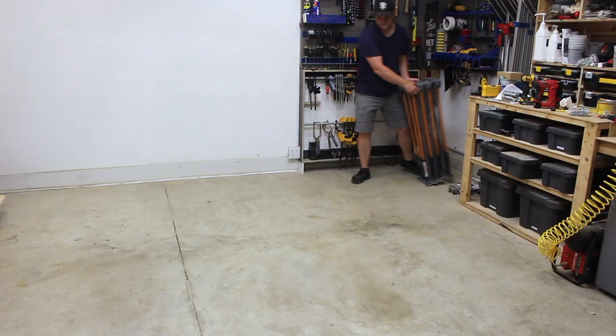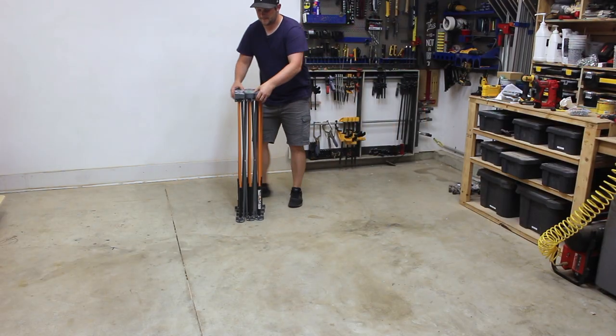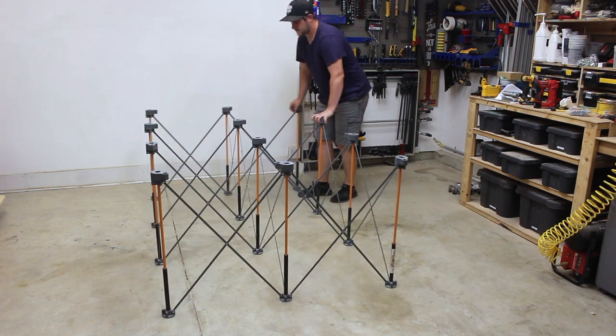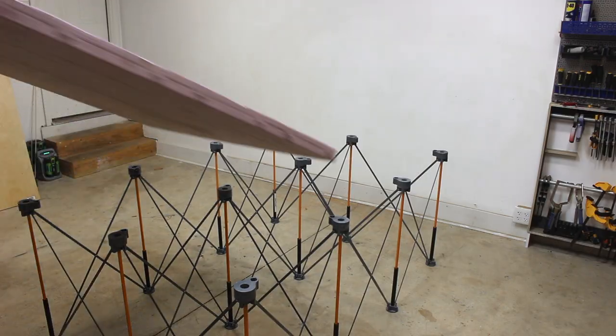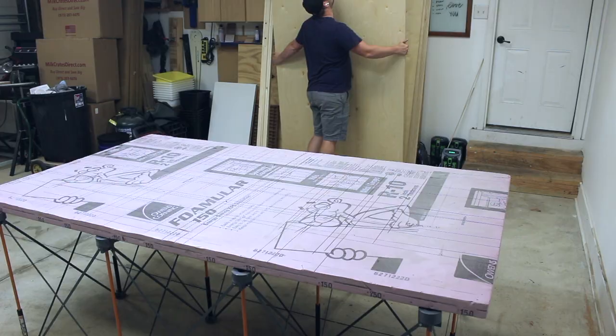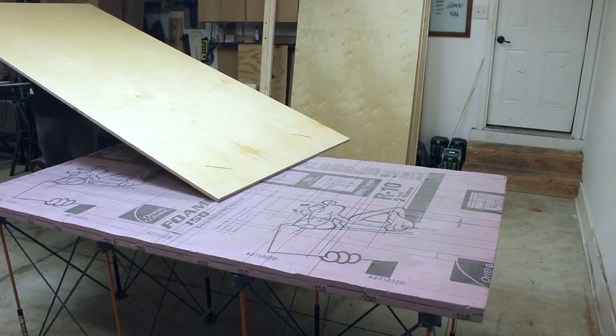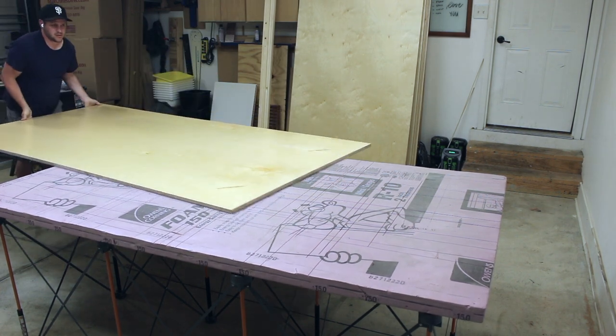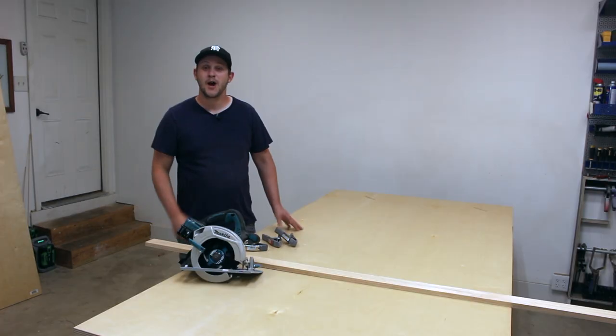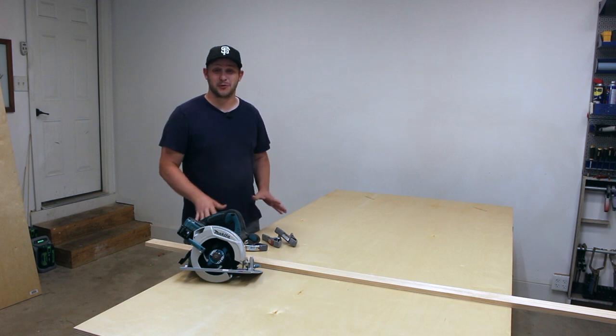Enough of me talking, let's get to work. Whenever I'm going to be breaking down large sheets of plywood, I always pull out my folding work table and throw a sheet of rigid foam insulation on top. This is a great solution because you can cut into it all you want without worrying about messing up your workbench.